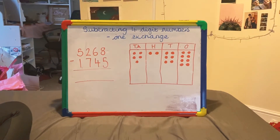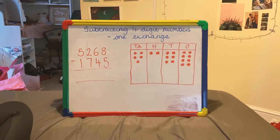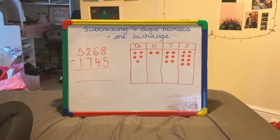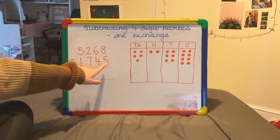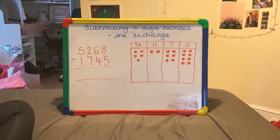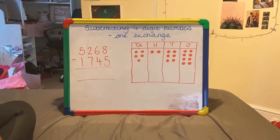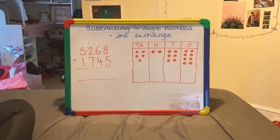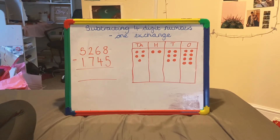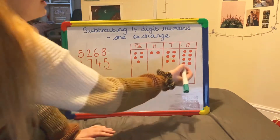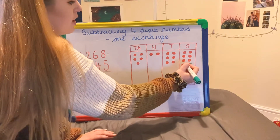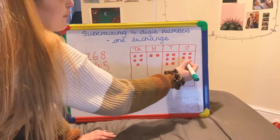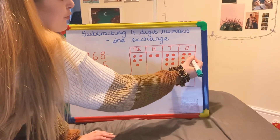The first step then is to start in the ones column. I am taking away 5. So just like with our other questions, we are going to put a neat cross through 5 of our circles: 1, 2, 3, 4, 5.